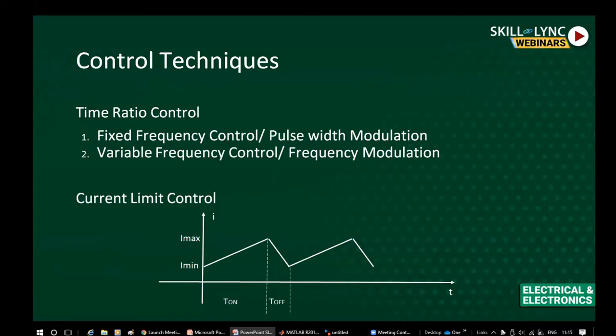In current limit control, we define I_minimum and I_maximum — the minimum and maximum load current values — and turn the switch on and off based on these current limits.